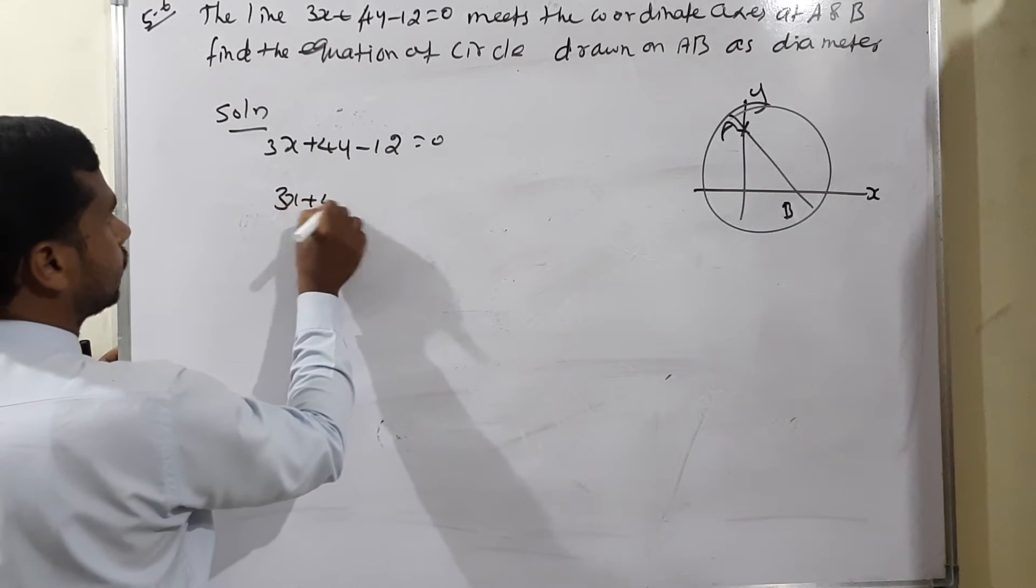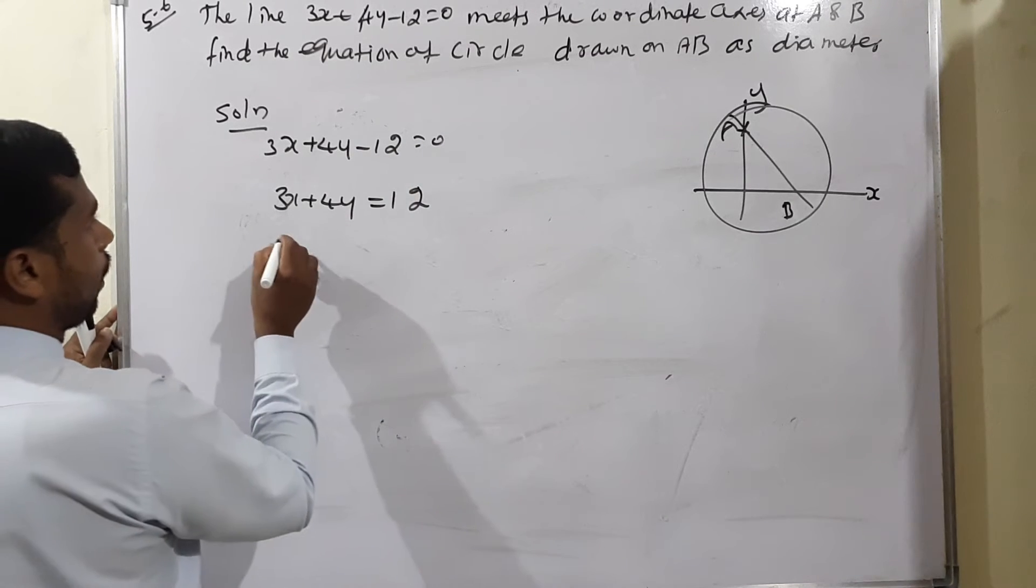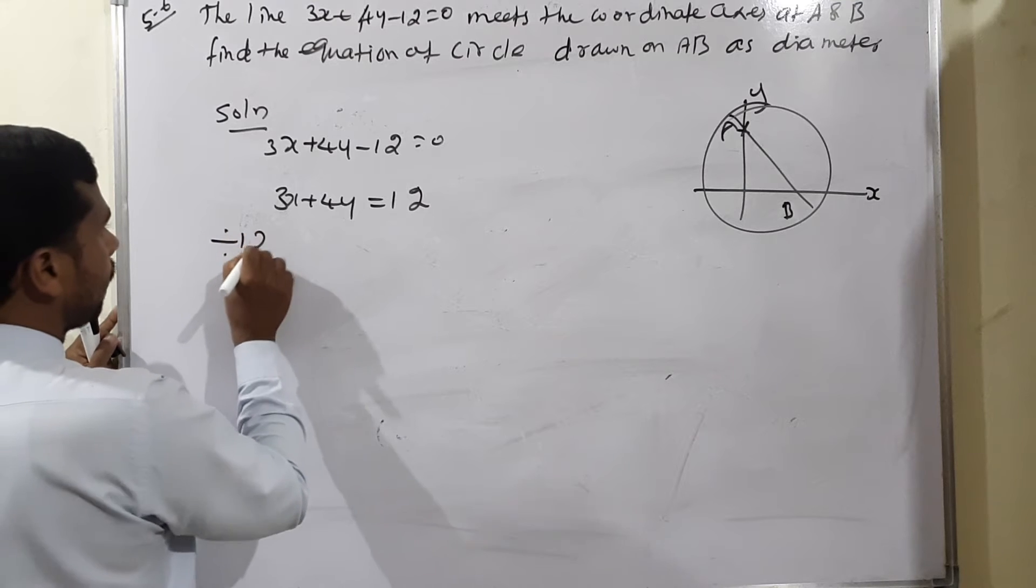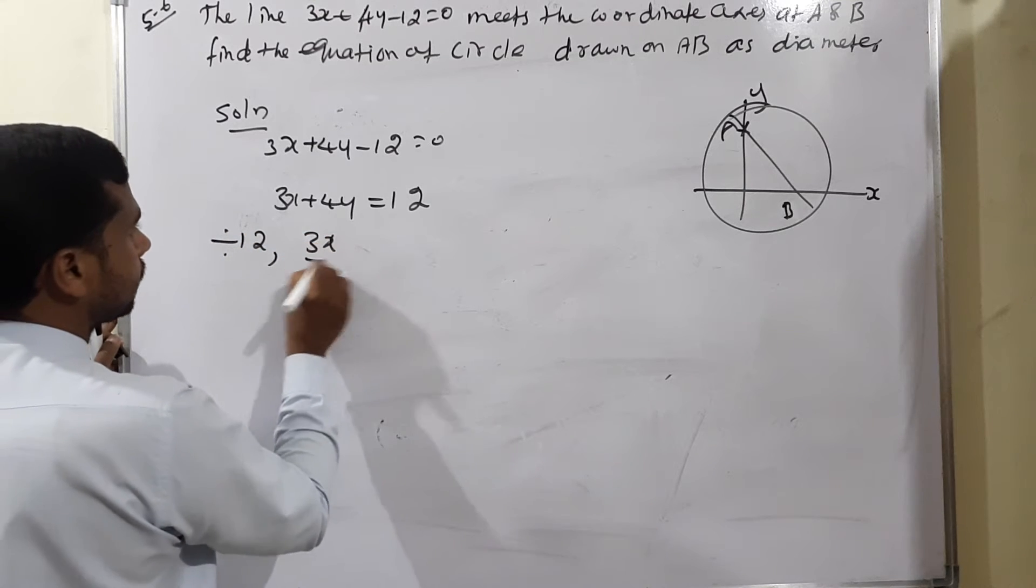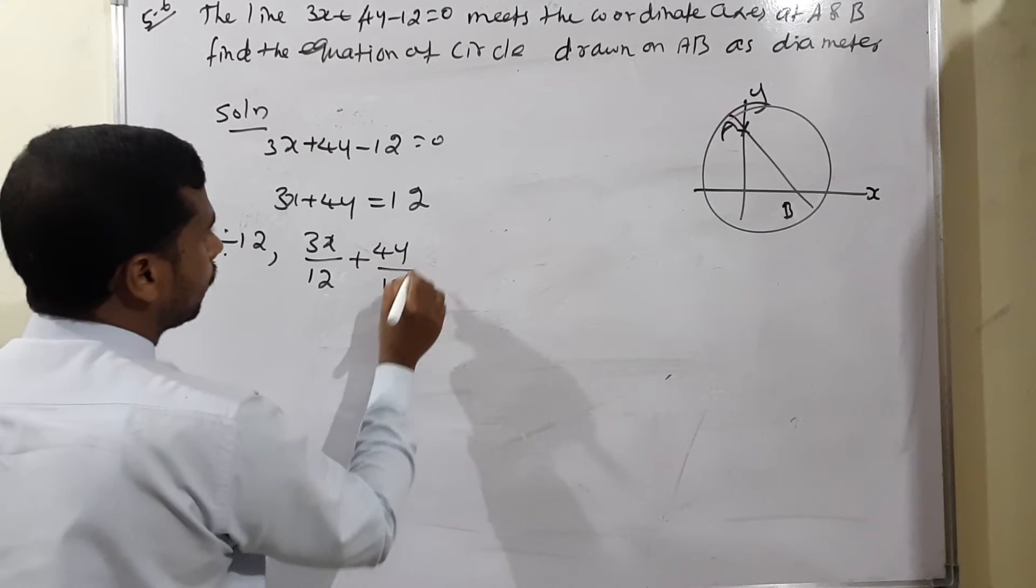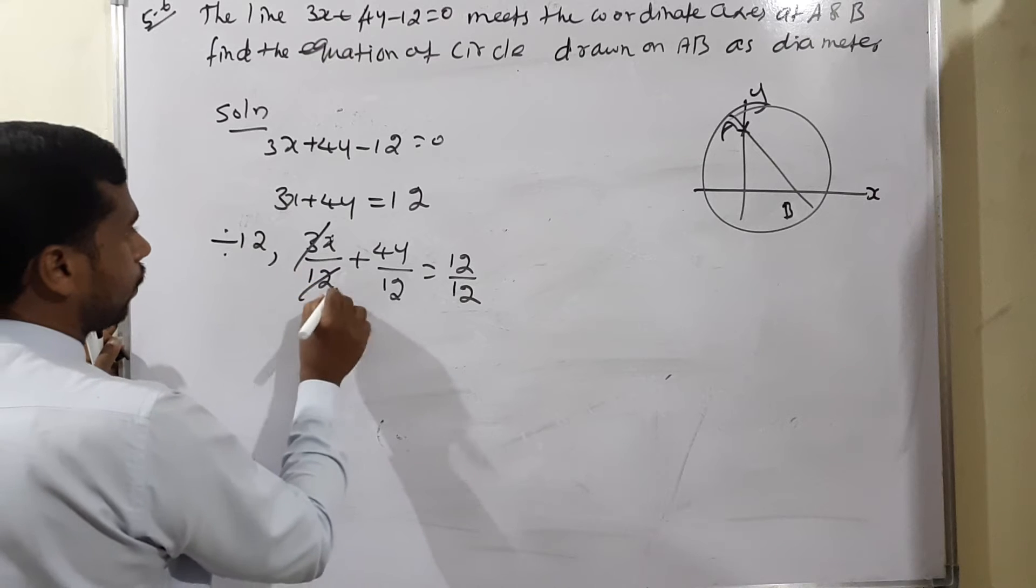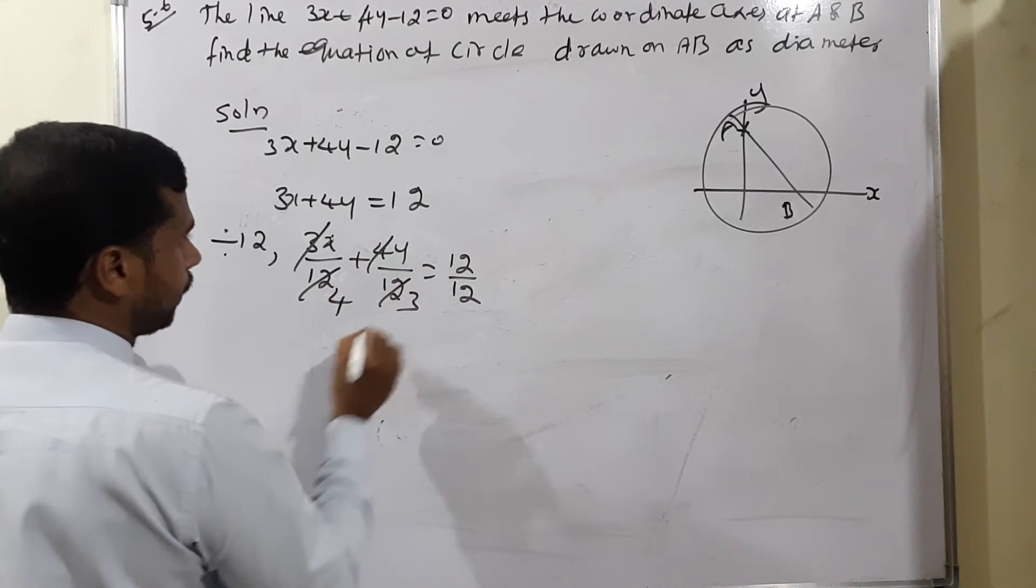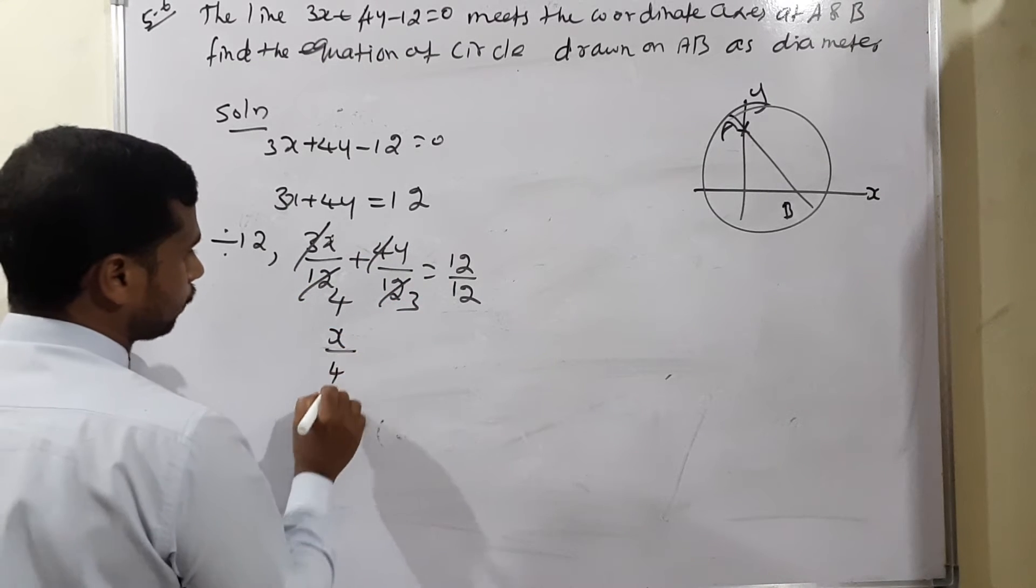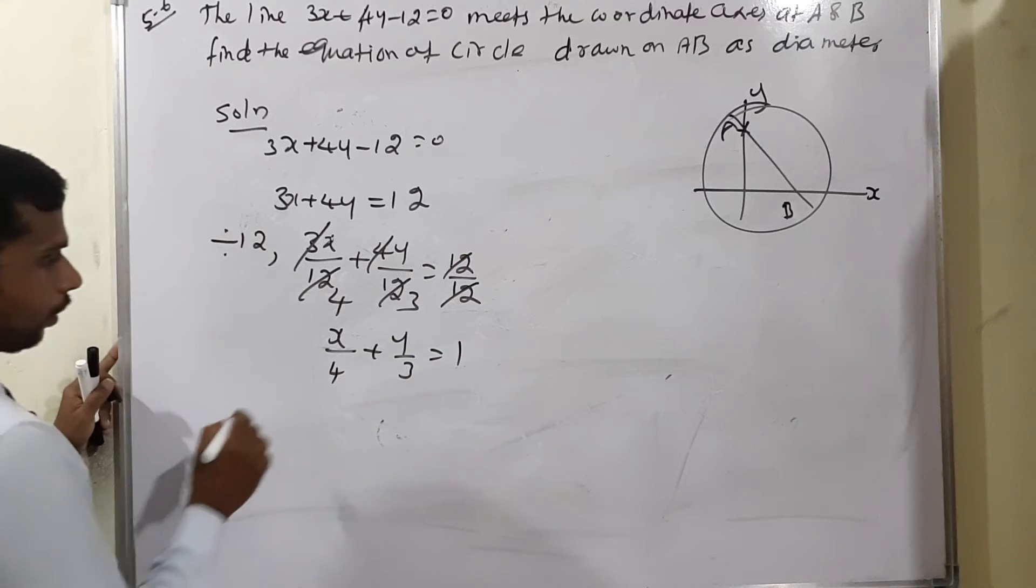3x plus 4y minus 12, bring to opposite side means positive 12. Now divide each term by 12 - 3x divided by 12 plus 4y divided by 12 equals 12 divided by 12. So 3 and 12 is 4, 4 and 12 is 3. Therefore, x by 4 plus y by 3 equals 1.